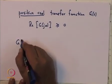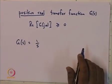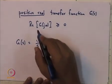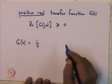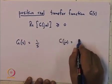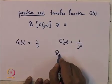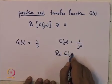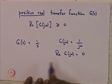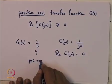Suppose you look at the transfer function G equal to 1/S. This transfer function is positive real. If you just take this definition, then G(jω) is 1/(jω). Therefore, the real part of G(jω) is equal to 0, and so the real part is greater than or equal to 0.